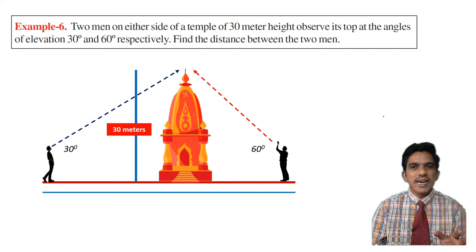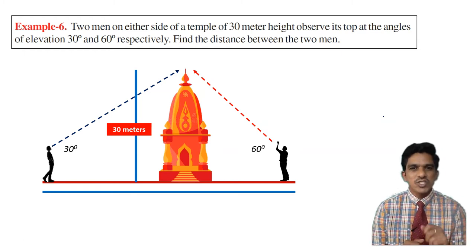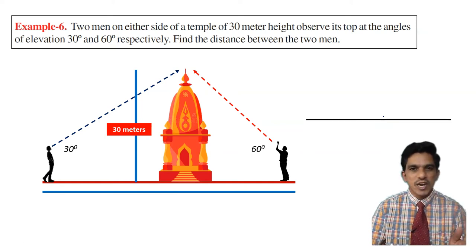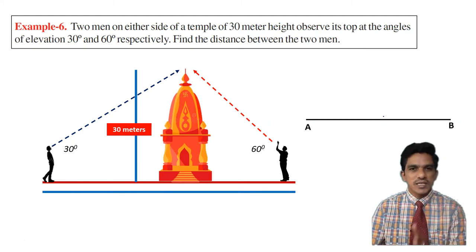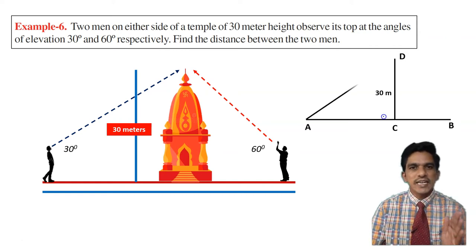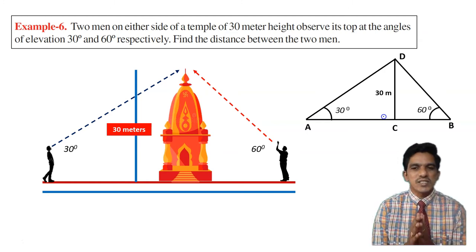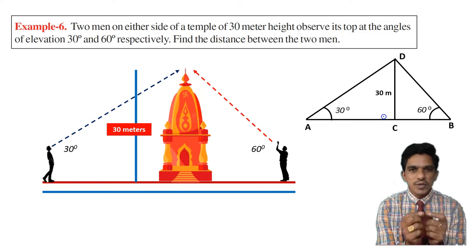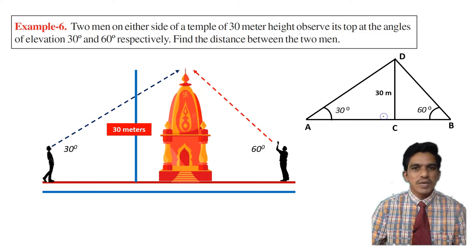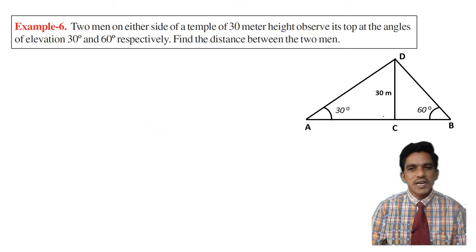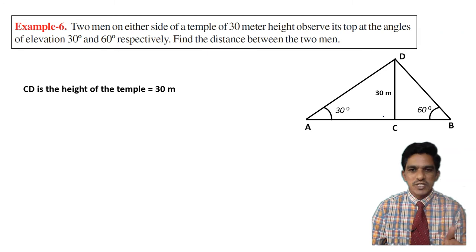This is the situation we have and we have to find the distance between the two observers. We have two angles of elevation and the height of the temple. Let us draw the diagram. Suppose this is the level ground and A and B are the two observers. CD is the temple whose height is 30 meters.